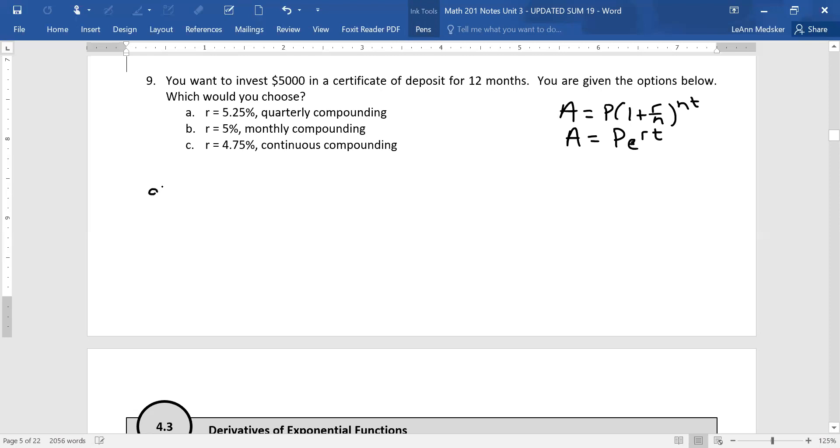If we do part A, we would have that our future value is our investment, which is 5,000 times 1 plus 0.0525. You have to make sure you turn that into a decimal. Quarterly compounding is 4. And then we raise it to the 4 and 12 months. A lot of people would want to put 12 in for this, but remember this is measuring in years. So this is actually just one year. Now I worked this out on my calculator and I got that this came out to $5,267.71.